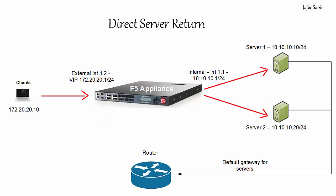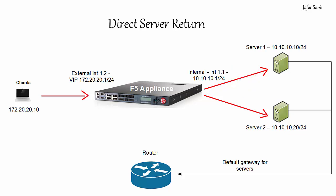In this deployment method, all traffic between the client and server passes via the F5 appliance — this is the cleanest and most ideal method. However, looking at a particular issue called direct server return or asymmetric routing: everything looks the same as inline mode, with an external subnet on the left and an internal subnet on the right, and the client sends a request to the VIP address 172.20.20.1. The issue arises when the server has a different default gateway configured — not the F5 appliance, but a router.